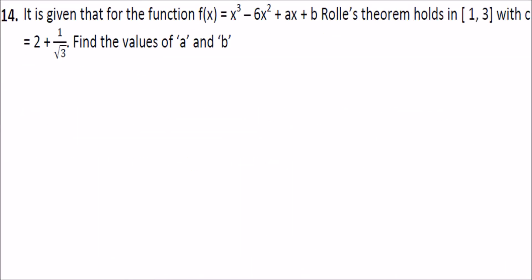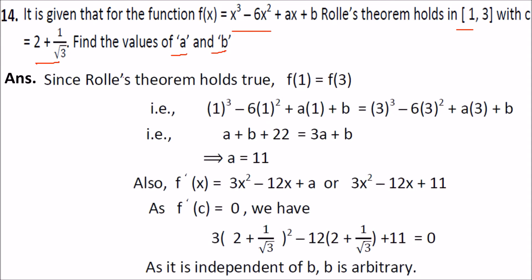It is given that for a function, Rolle's theorem holds in the interval [1, 3] with c equal to 2 plus 1 by root 3. You have to find the values of a and b. Since Rolle's theorem holds, f(1) equals f(3). Place 1 and then 3 in the function and equate to get the value of a. Then find f'(x), the derivative.